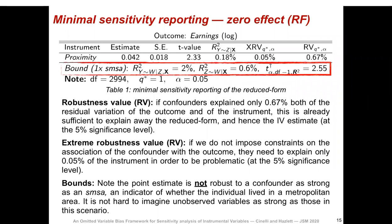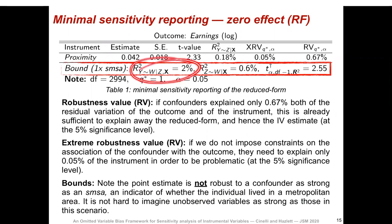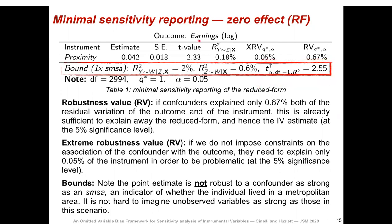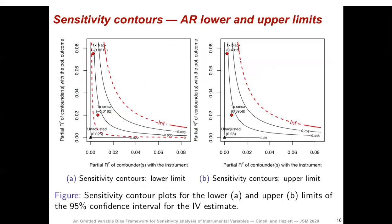To put these numbers in context, we provide a bound on the strength of confounding if it were as strong as SMSA — an indicator variable of whether the individual lived in a metropolitan area. A confounder as strong as SMSA would explain 2% of the residual variation of the outcome and 0.6% of the residual variation of the instrument, implying a new critical value of 2.55. Since the t-value is less than this OVB-adjusted critical value, we conclude that confounding of such strength would be strong enough to be problematic. We can also assess sensitivity for other hypotheses beyond the null using contour plots of the lower and upper limits of the Anderson-Rubin confidence interval.